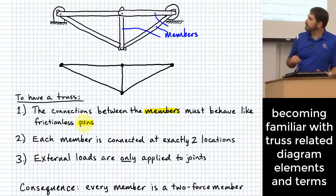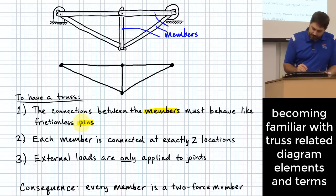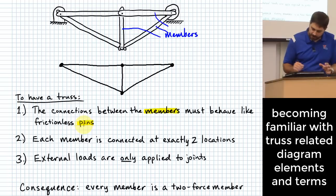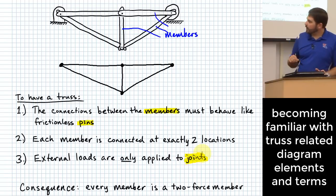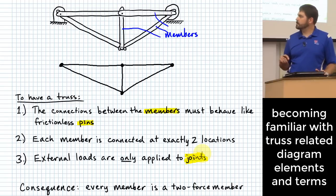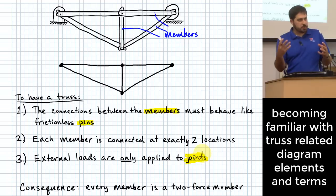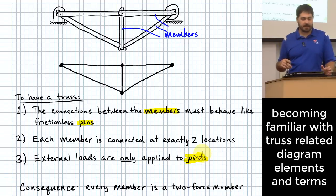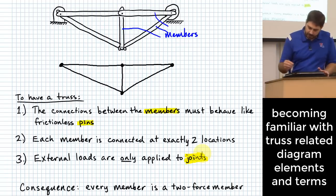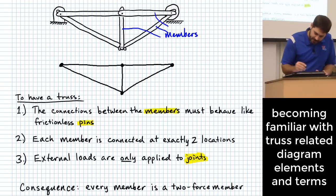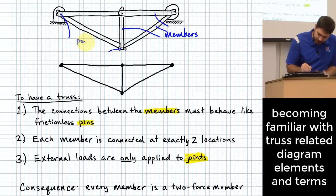Another word is 'pins.' With respect to trusses, pins are often interchangeable with the word 'joints.' We kind of mean the same thing when we talk about pins and joints in a truss. Those pins or joints are the little connection locations where members meet.